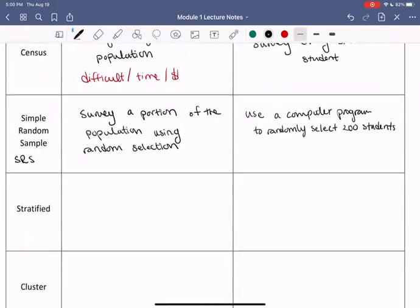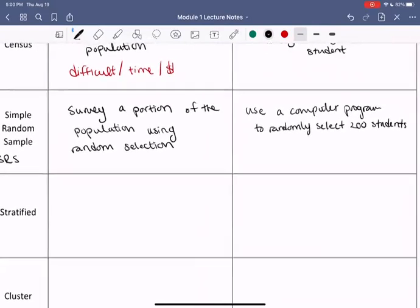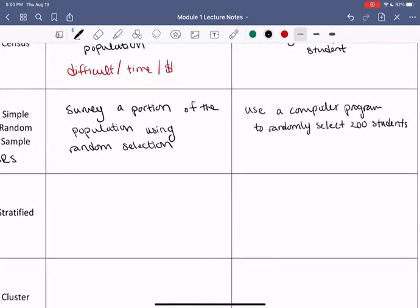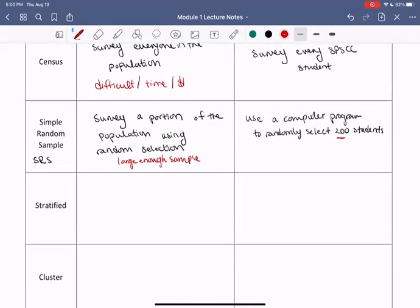So a few comments about this type of simple random sample is that you want to make sure that you get a large enough sample in order to get meaningful data. So typically a large enough sample is at least 30, but here in my example I have 200. So just note you want a large enough sample. Sometimes large enough sample depends on your population. Suppose if you want to get data about the entire US, then it might not make sense to have only 30 people in your sample because 30 people won't even give you one person from every state. So it often depends.